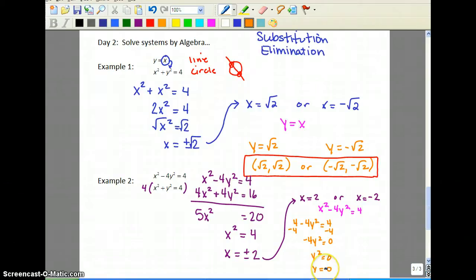Now you don't put plus or minus because it's a 0. Now if you plug in negative 2, you're going to get also a positive 4 minus 4y squared equals 4. This process is all going to be the same and you're also going to get y equals 0.